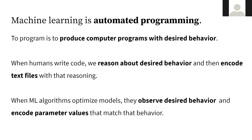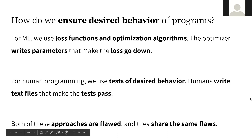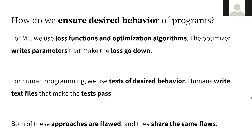This is a very different process, but they have the same end result, which is a computer program — whether it's ResNet.py or HelloWorld.py. But the process by which they come about is quite different. Focusing on the similarities, in both cases we need to ensure that our programs have the desired behavior. For machine learning, we use loss functions and optimization algorithms. The optimizer will write some parameters that make the loss go down, and that is how we try to ensure our machine learned algorithm is behaving correctly.